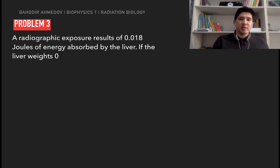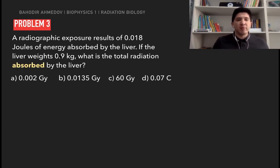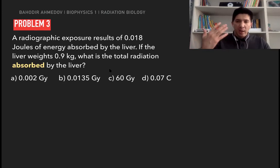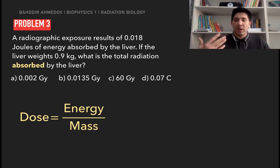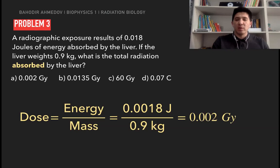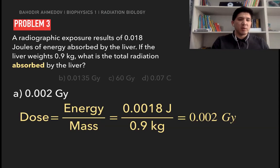Problem number three: a radiographic exposure results in 0.018 joules of energy absorbed by the liver. If the liver weighs 0.9 kilograms, what is the total radiation absorbed by the liver? We find the absorbed dose by dividing the energy deposited by the mass of the material. The energy is 0.018 joules divided by 0.9 kilograms, which equals 0.02 gray.